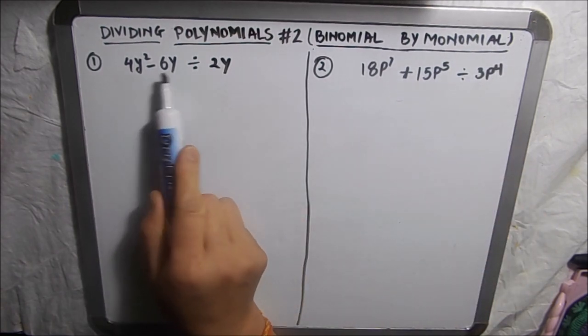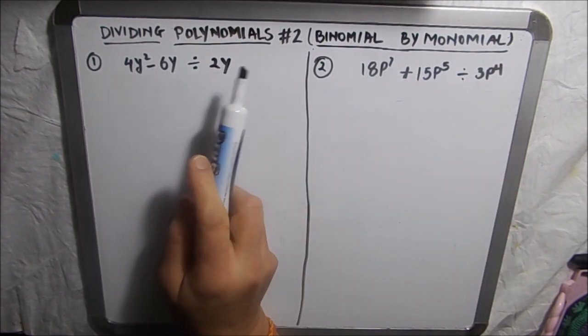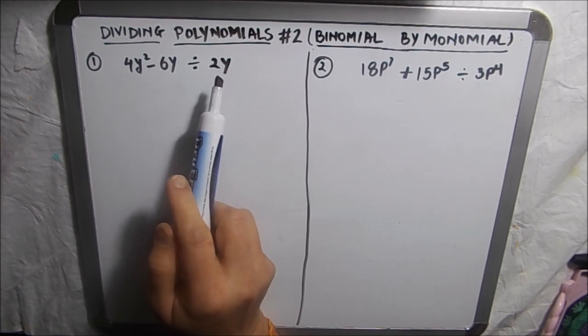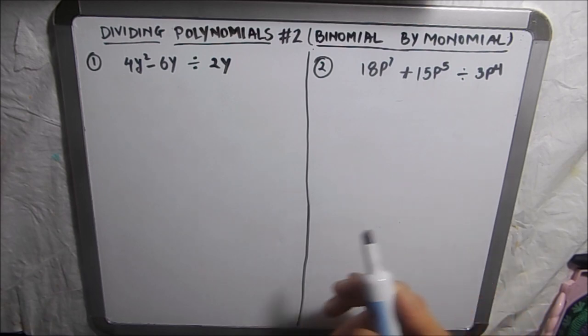Binomial is an expression having two terms and monomial is an expression having only a single term. So let's get started. We are going to solve two examples here.